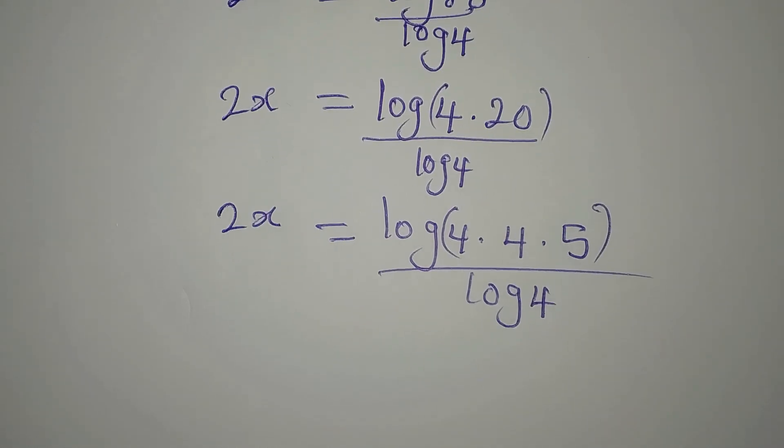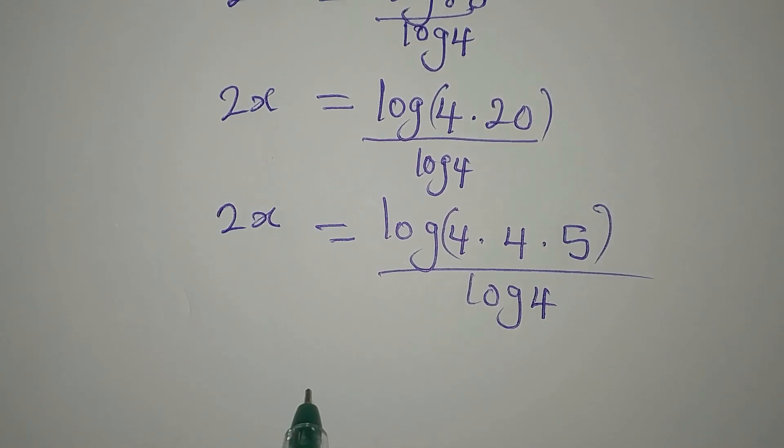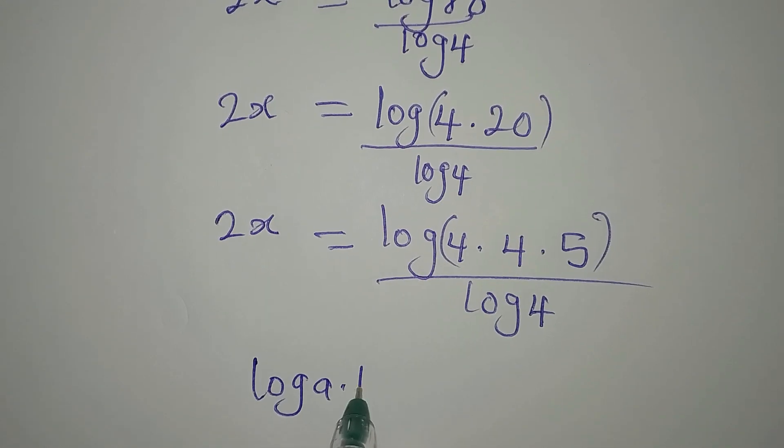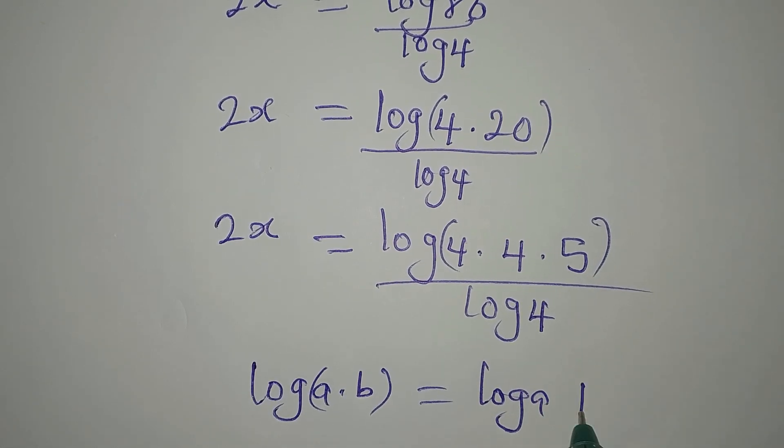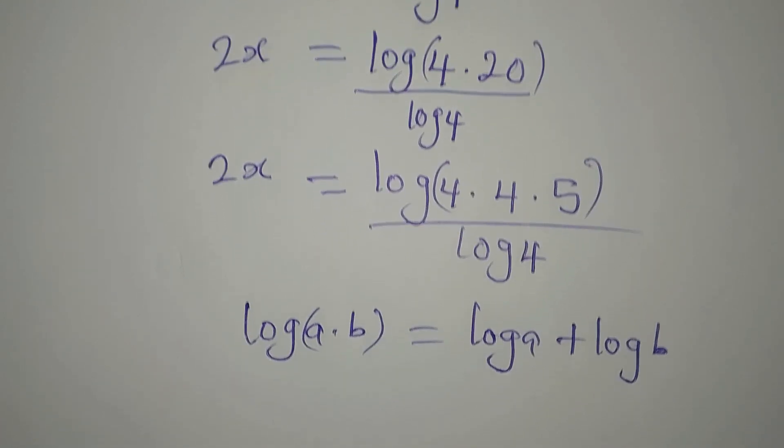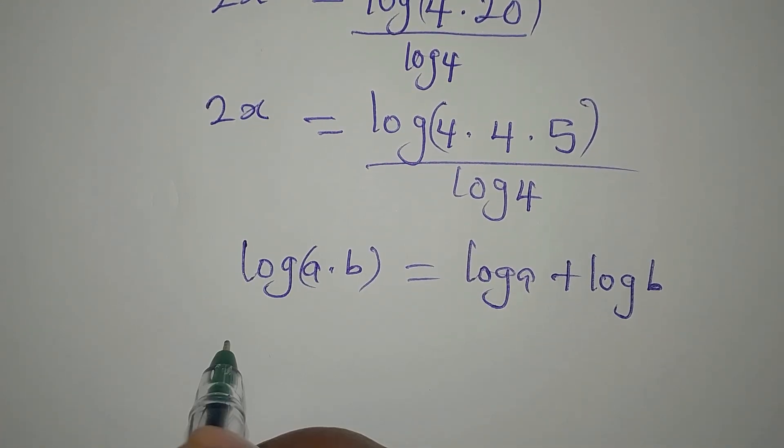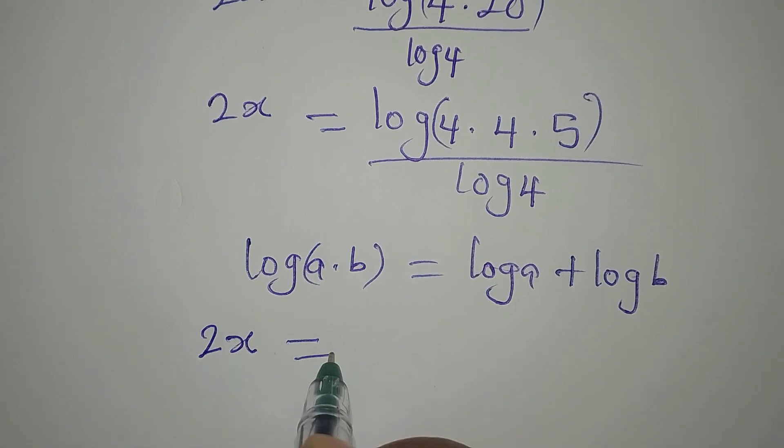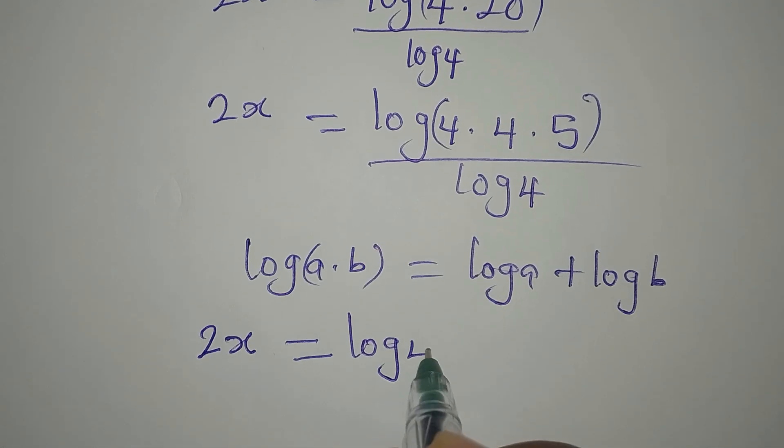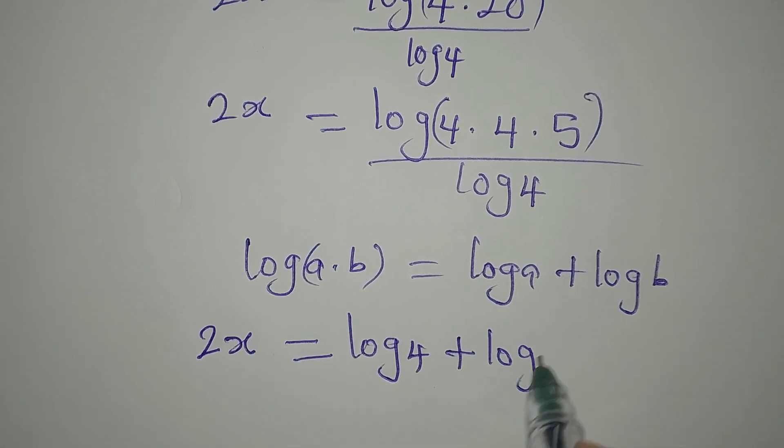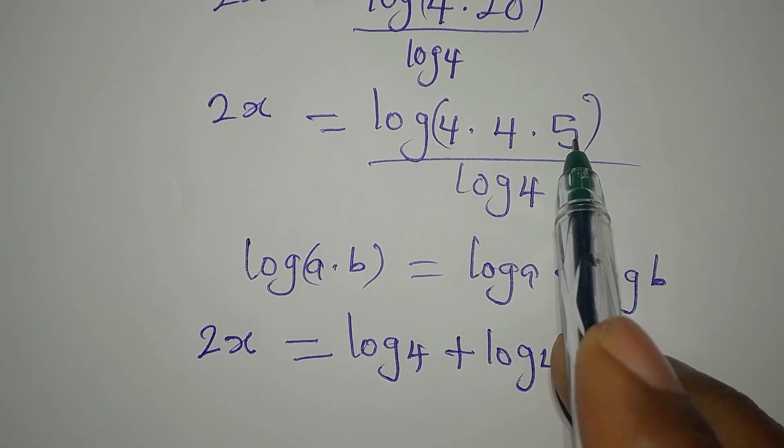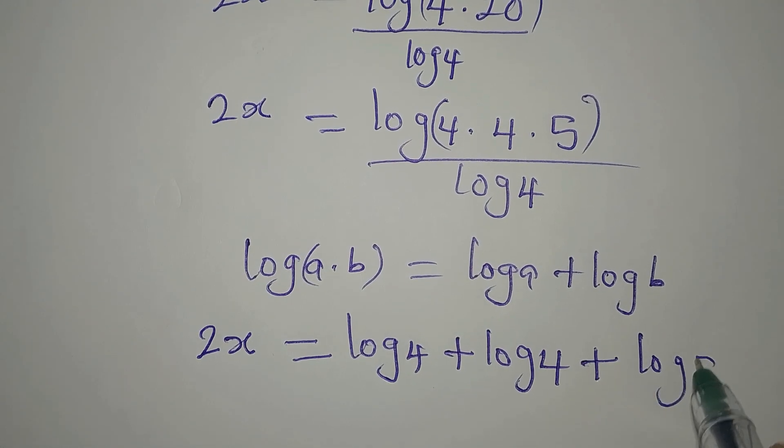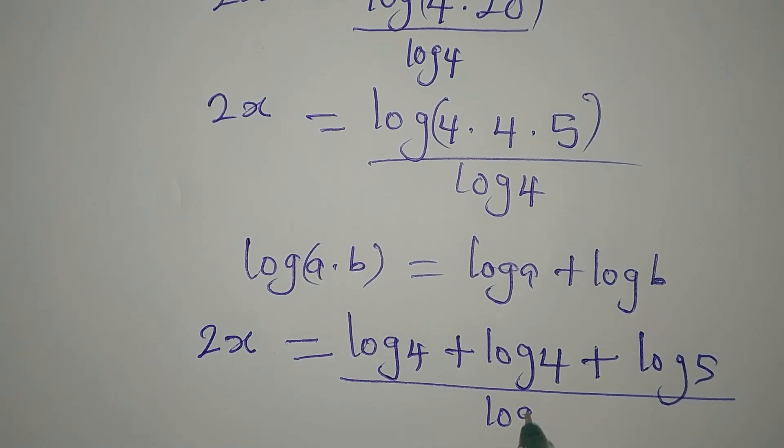Then we will now apply one of the laws of logarithm again that says if you have log A times B, this is the same thing as log A plus log of B. So if there are three terms, it will still be the same thing. Now this means that I will have 2x to be equal to log 4 plus log 4 plus log 5. All of this is divided by log 4.